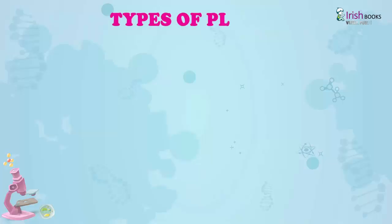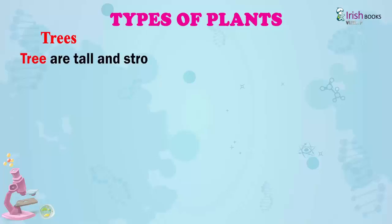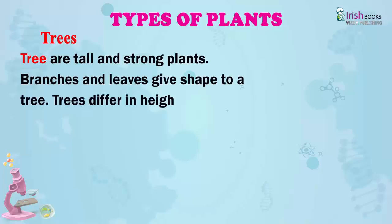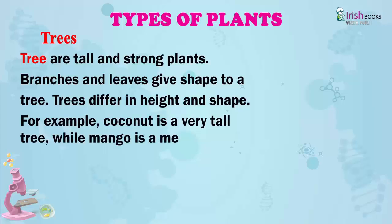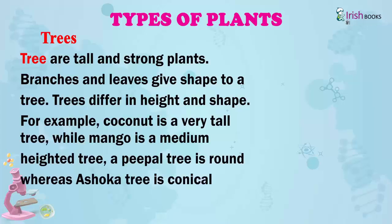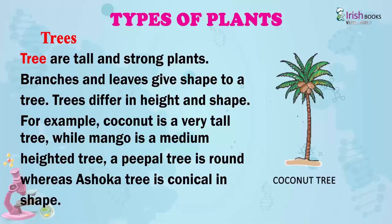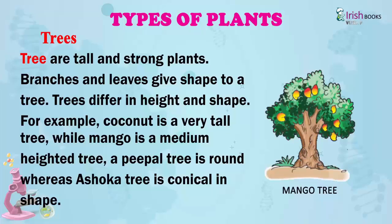Types of plants. Trees. Trees are tall and strong plants. Branches and leaves give shape to a tree. Trees differ in height and shape. For example, coconut is a very tall tree while mango is a medium-heighted tree. A peepal tree is round whereas Ashoka tree is conical in shape.